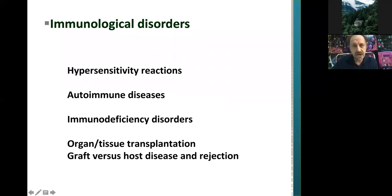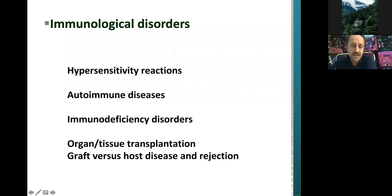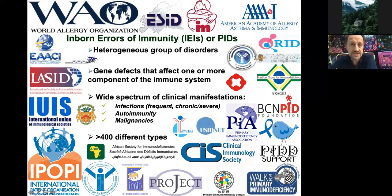I should list some common disorders of the immune system, like hypersensitivity disorders including allergic diseases, asthma, and several allergic reactions in different organs; autoimmune diseases, which could be classified as hypersensitivity types 2 to 4; immunodeficiency disorders, which could be either primary or secondary; and transplantation complications like GVHD. These are the most common disorders of clinical immunology. But today, I'm planning to discuss primary immunodeficiency diseases, which can also be named inborn errors of immunity.